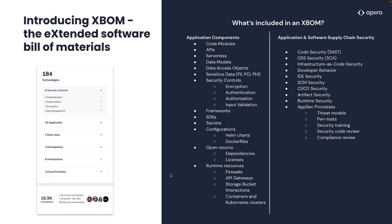This is largely the reason why here at Apiro we feel your software bill of materials should encompass substantially more — all of the things that have a direct relationship within that application and could potentially introduce risk. So this is why we introduced our extended software bill of materials. When we talk about our extended software bill of materials, or our XBOM, we're talking about all of the application components as well as risks that tie to those application components across your development lifecycle. Some of the things we include in our XBOM: code modules, what APIs do you have, do you have any serverless technology, what data models, where do you have sensitive data, what types of security controls are you using, frameworks, SDKs, open source dependencies, et cetera.